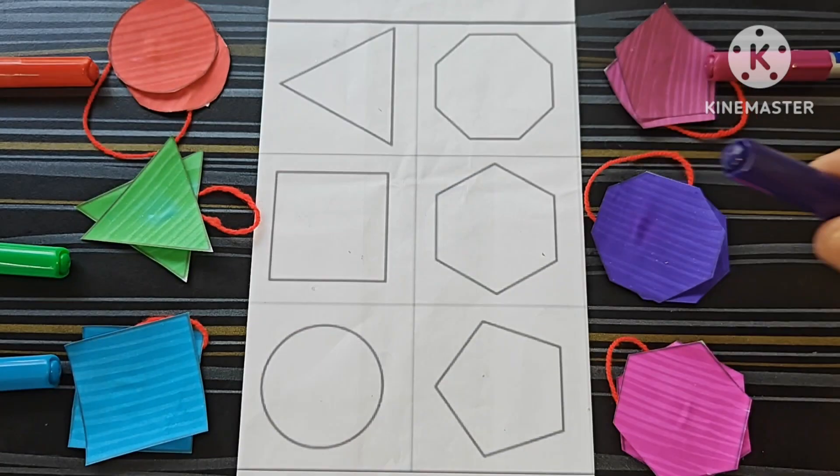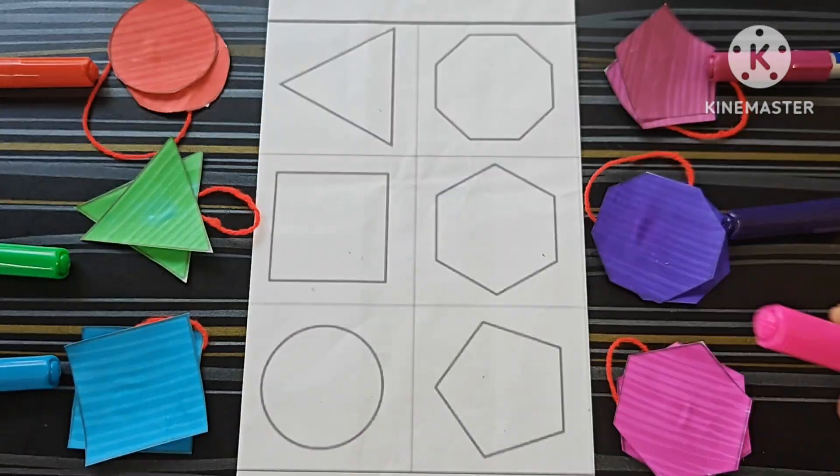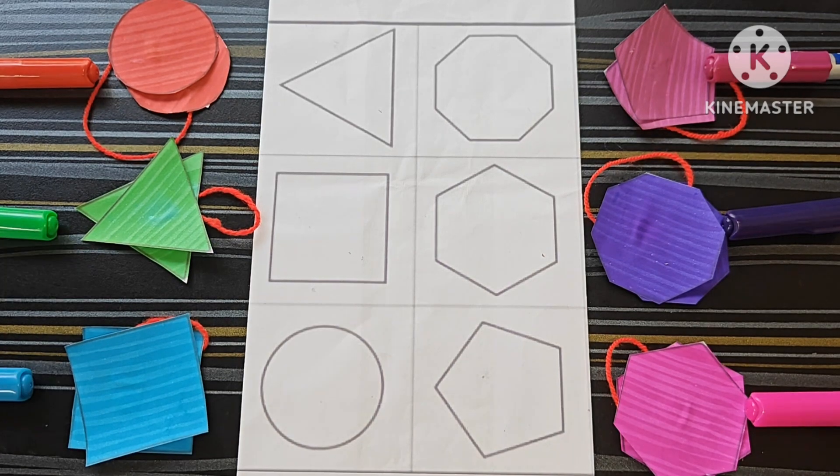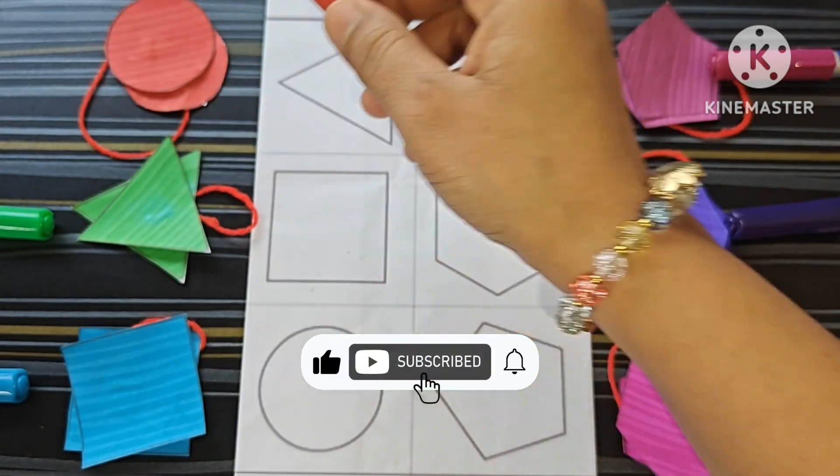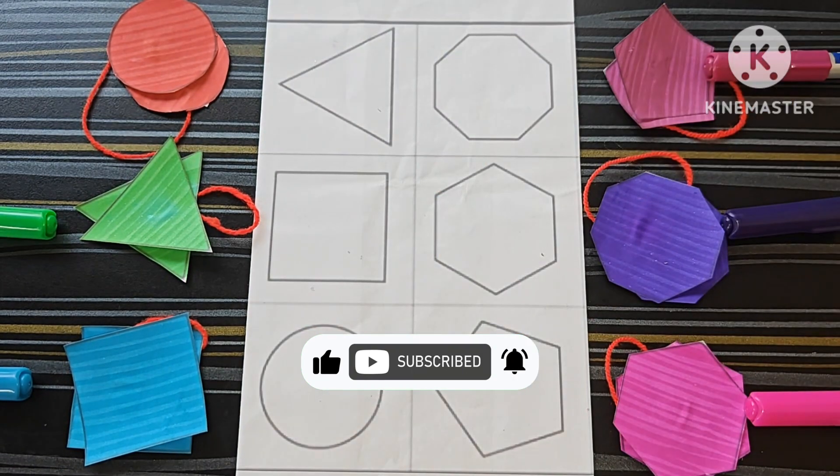Violet, purple, pink. Let us color the shapes. This is red color and here this circle, this is also a circle, so we will color the circle.